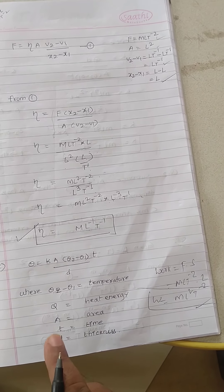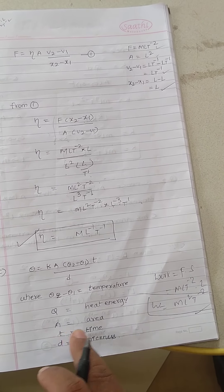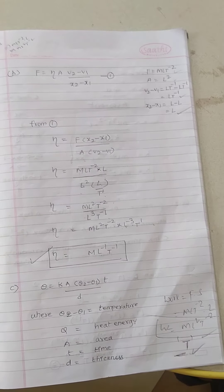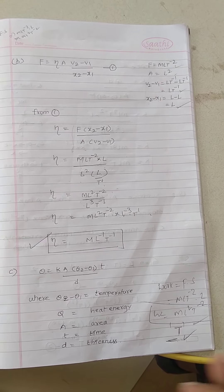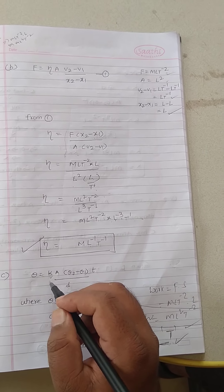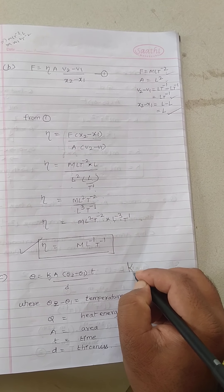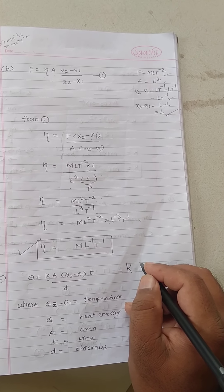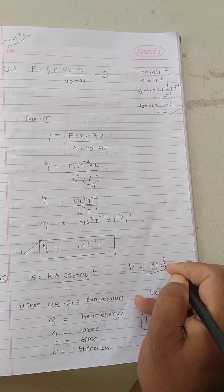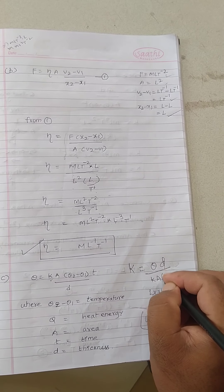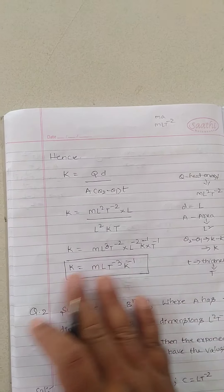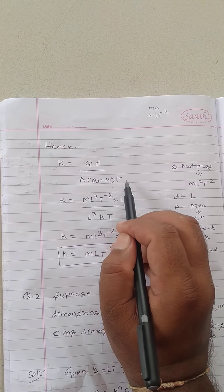Instead of Q, substitute ML²T⁻². A is area (L²). T is time. D is thickness (L). We don't know K, so we rearrange: K = Q × D / [A × (θ₂ − θ₁) × T]. That gives K = ML²T⁻² × L / (L² × K × T), where K here represents Kelvin for temperature difference.